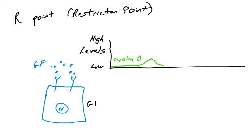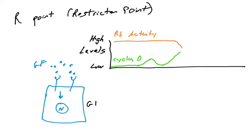If cells are exposed to a high enough concentration of growth factor, or exposed for a long enough time, or other signals allow for a critical level of cyclin D to be produced, this can finally have an effect on RB activity. During G1, RB is very active, repressing E2F target genes. When cyclin D levels reach a certain level, RB activity starts to go down because cyclin D joins with CDK4 or 6 to phosphorylate and inactivate RB.